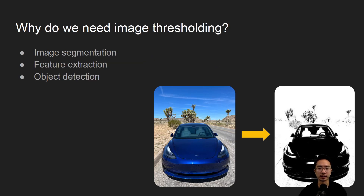So why do we need image thresholding? The reason why we may need it is for certain things like image segmentation, feature extraction, or object detection, and it's pretty useful for a lot of pre-processing steps.